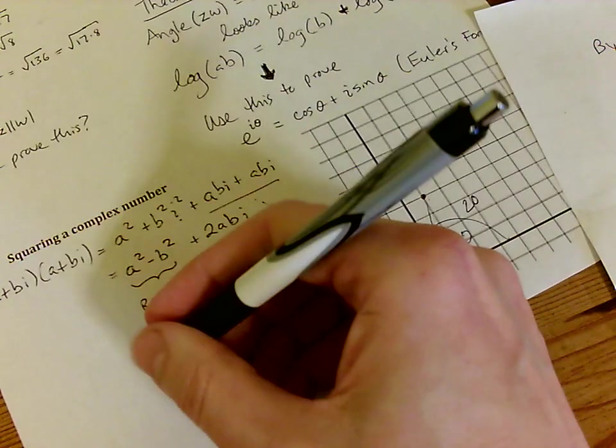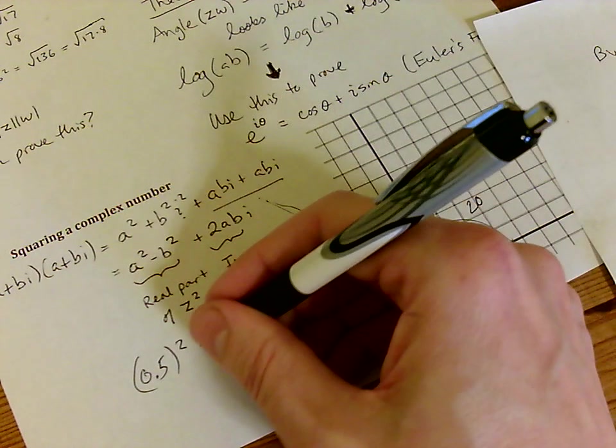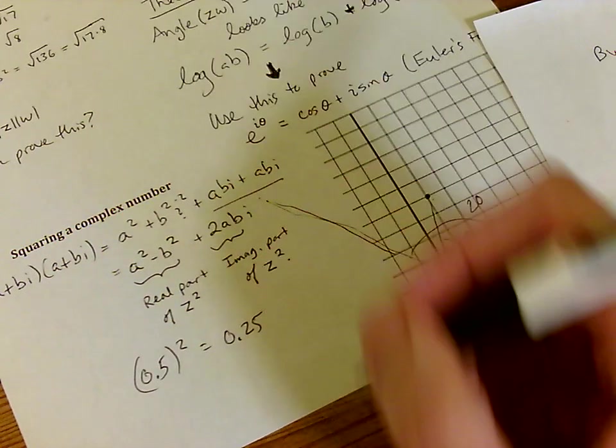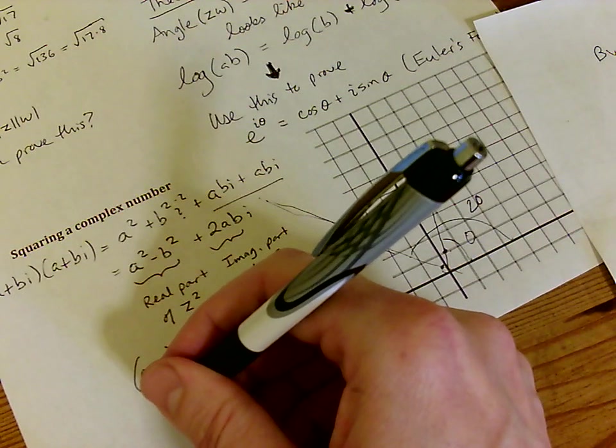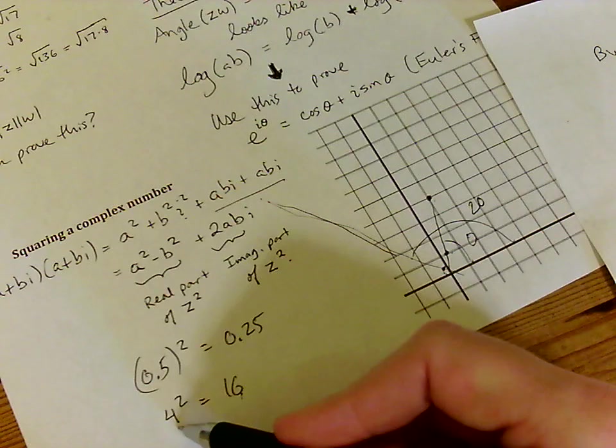Kind of like if you take a number that's smaller than 1, like a half, and you square it, you get 0.25, which is even closer to the 0 than where you began. But if you take a large number, like 4, and you square it, you get a number that's larger than where you started.